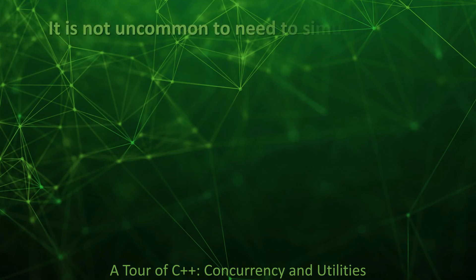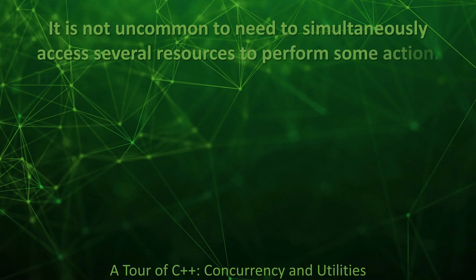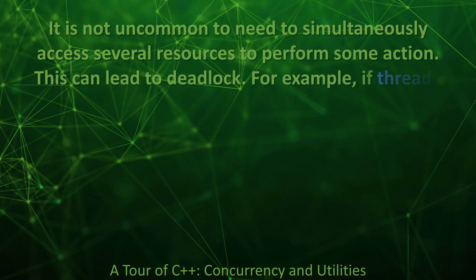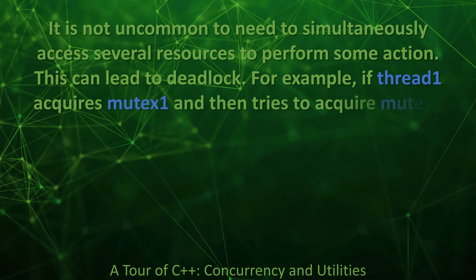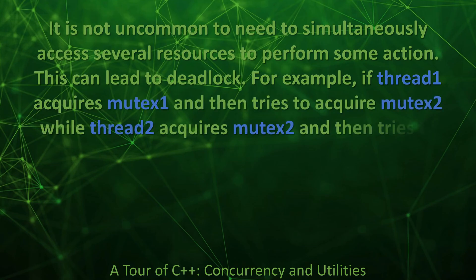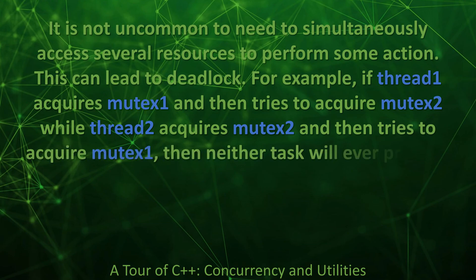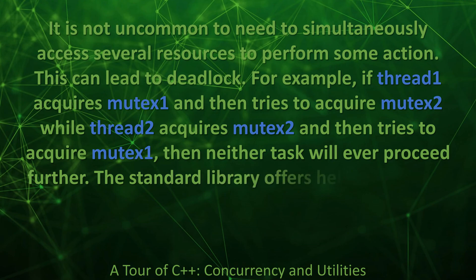It is not uncommon to need to simultaneously access several resources to perform some action. This can lead to deadlock. For example, if thread 1 acquires mutex 1 and then tries to acquire mutex 2, while thread 2 acquires mutex 2 and then tries to acquire mutex 1, then neither task will ever proceed further.